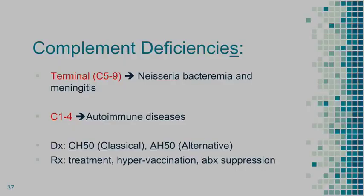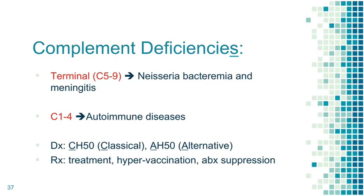Complement deficiencies: a very common question. Terminal complement C5 through C9 deficiency leads to recurrent Neisseria bacteremia and meningitis. C1 through C4 deficiency is associated more with lupus and other autoimmune diseases rather than immune deficiency per se. Diagnosis: start screening with CH50 for the classical pathway, then do subtypes for which specific component. For the alternative pathway, use AH50. Treatment includes antibiotic suppression and some papers suggest hypervaccination with meningitis and pneumonia vaccines.